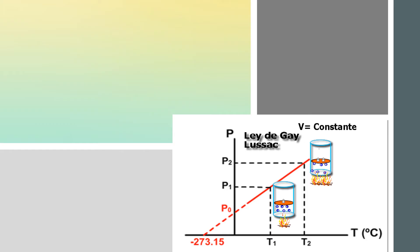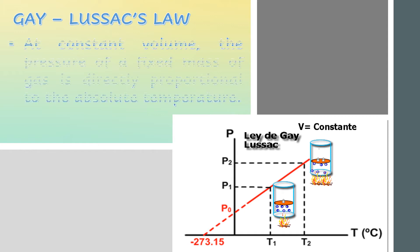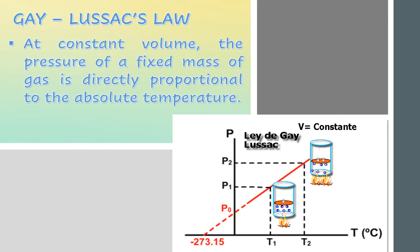From the graph, pressure increases with an increase in temperature and vice versa. A temperature-pressure relationship, also known as Gay-Lussac's Law, states that at constant volume, the pressure of a fixed mass of gas is directly proportional to the absolute temperature.